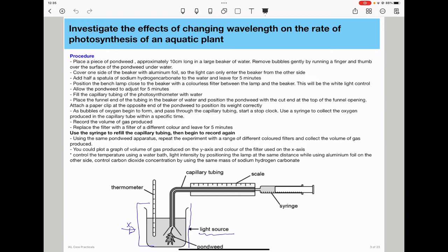Each time you have to collect the volume of gas produced. You could be asked to plot a graph. In this case, you'll plot the graph of volume of gas produced on the y-axis and the color of the filter used on the x-axis. And as you can see, this could be a bar graph.